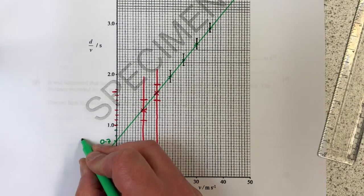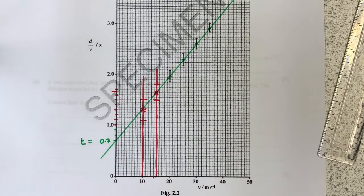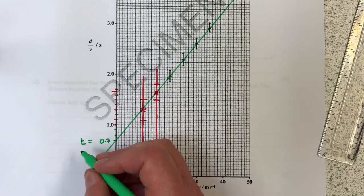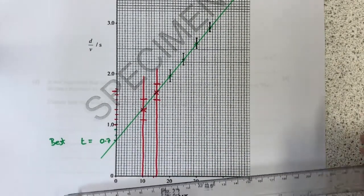So let's work out what this y-intercept is. So that's 0.9, 0.8, 0.7 is my y-intercept. And the y-intercept is the same as the reaction time, so my best value for the reaction time t is 0.7. I better put best next to that.